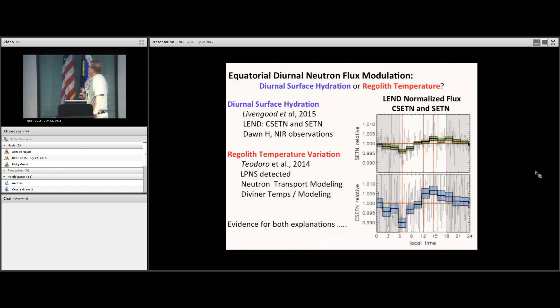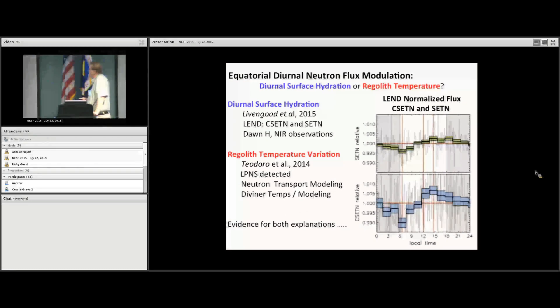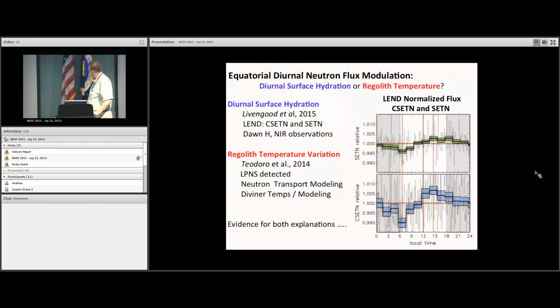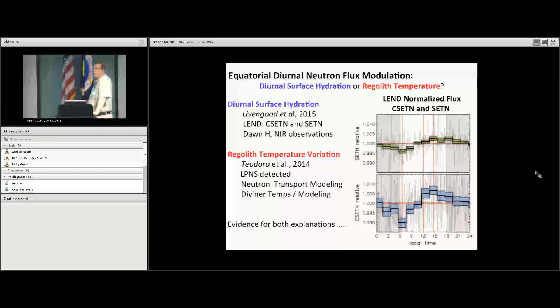So this is what got this debate of regolith temperature and diurnal hydration going. This was originally about two years old, this ongoing debate. It was originally identified by Tim Livingood in 2015, and what he showed in his paper was starting at midnight, he made the case that this modulating neutron flux that he identified in an equatorial study was accumulating.